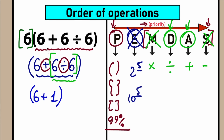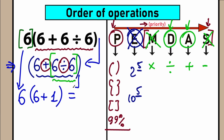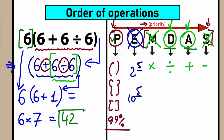We don't need the full order of operations anymore at this point. We rewrite the expression with the 6 in the beginning: 6 times the parentheses result. Since parentheses always have the highest priority, we evaluate inside first — 6 plus 1 equals 7. So we have 6 times 7, which equals 42. This is our correct answer.